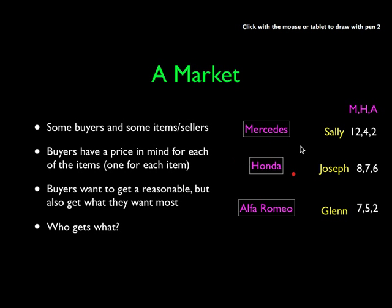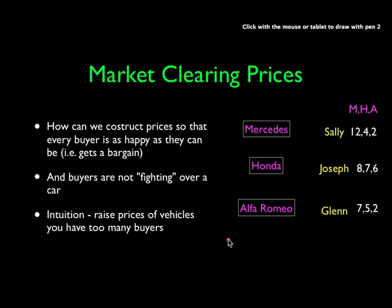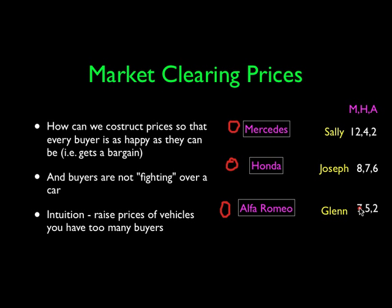They all have this in mind. Now, the key thing is we all need to buy an item, and everyone wants to get the item that's going to make them happiest. They want a reasonable price, but they do want the one they want most. Sally really wants the Mercedes more than the Honda or the Alfa Romeo. So the question is: who gets what in our little market? How can we construct a set of prices so buyers aren't fighting over things? If everything is at zero price, everybody wants the Mercedes.